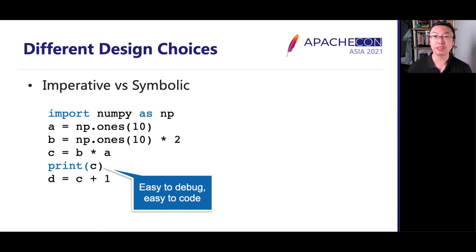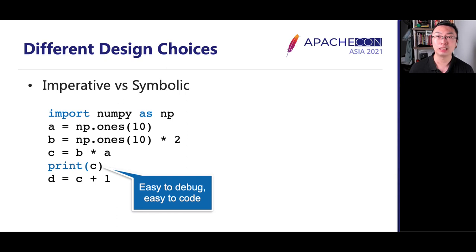Secondly, frameworks also have different design choices in terms of programming paradigms. Historically, MXNet provides two programming paradigms: imperative programming and symbolic programming. One of the most well-known array libraries that provides imperative programming is NumPy. In this NumPy program, I created two arrays A and B, each containing a bunch of 1s. Then I multiplied B by 2, then multiplied the results of B with A to get array C. I printed C and then added 1 on top of C. As you can see, I can print the intermediate results anywhere I need — it's very easy to debug and code.